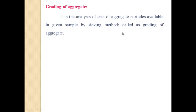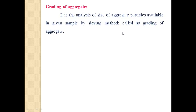The next topic is the grading of aggregate. Grading of aggregate is the analysis of the size of aggregate particles available in a given sample by sieve method. Aggregates comprise about 55% of the volume of mortar and about 85% of the volume of mass concrete.